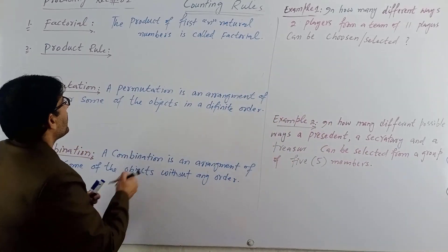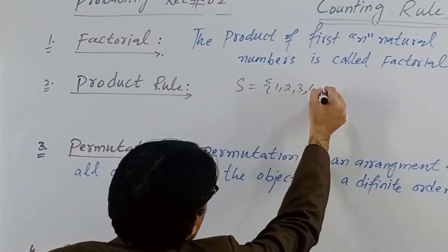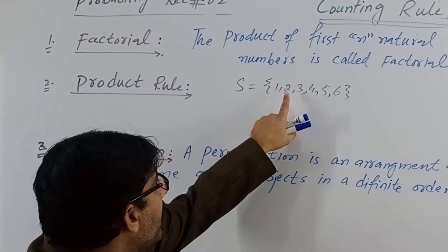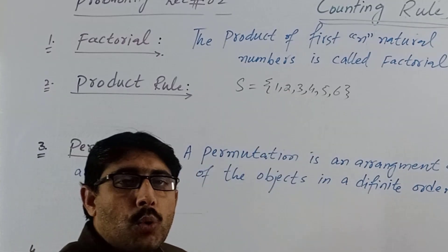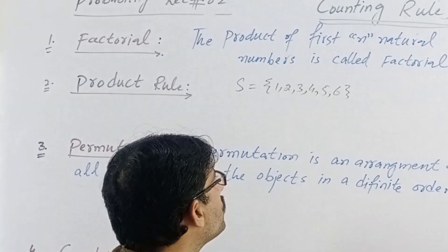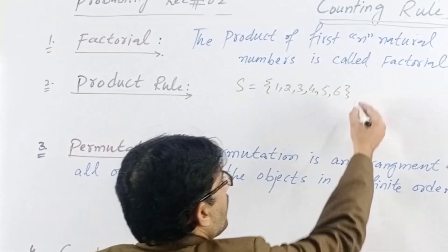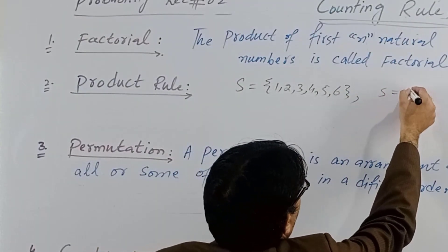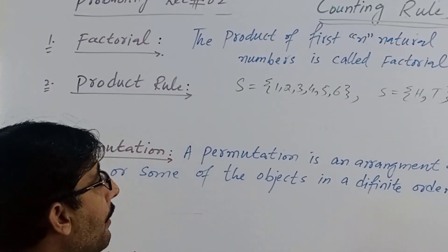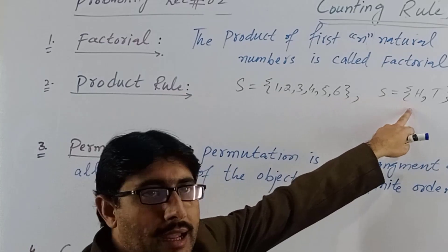If we roll the die, its sample space is {1, 2, 3, 4, 5, 6}, as discussed in the previous lecture. The die has 6 possible outcomes because it is a cube shape with 6 sides, each marked with dots from 1 to 6. Similarly, for the coin, the possible outcomes are Head and Tail — so 2 possible outcomes.